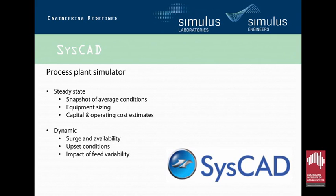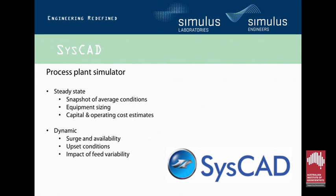Understanding your process is another key benefit. SysCAD allows you to model in two — actually three — different methods. There's the steady state model, which is a snapshot average of composition where mass in equals mass out at all points. This typically forms the basis of cost studies, with steady state outputs feeding into mechanical calculations and equipment sizing. You also have the ability to do dynamic simulations, which allows you to model surge availability, upset conditions, and feed variations — integrating these directly into your model with chemistry to analyze impacts on processing.